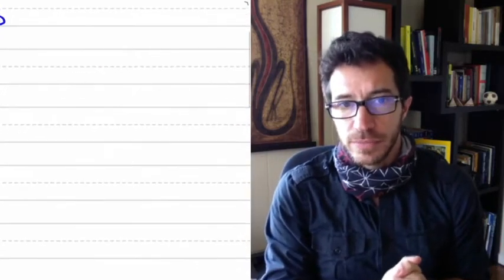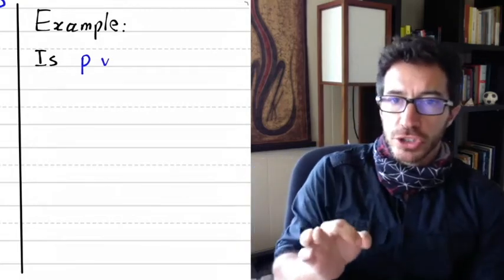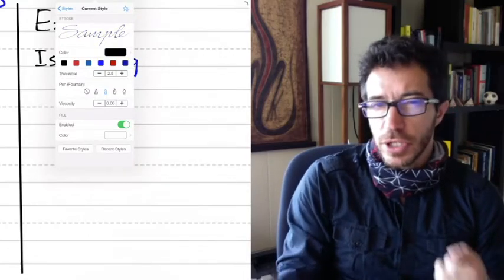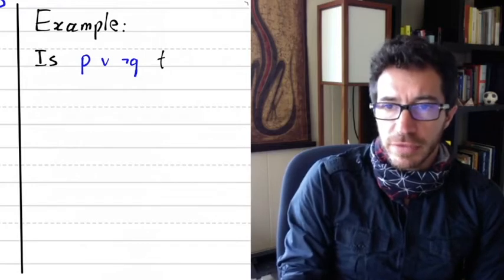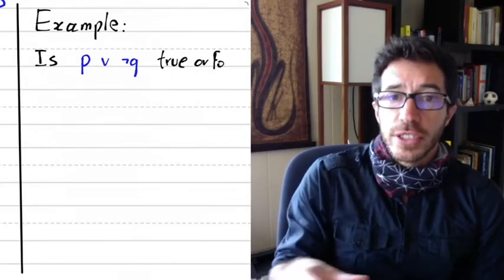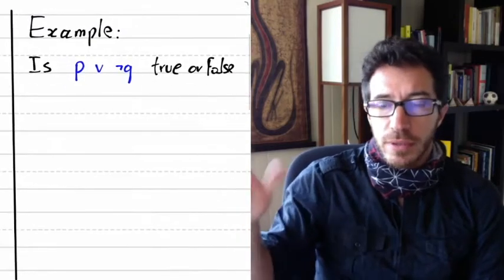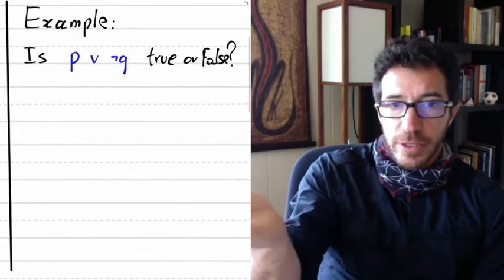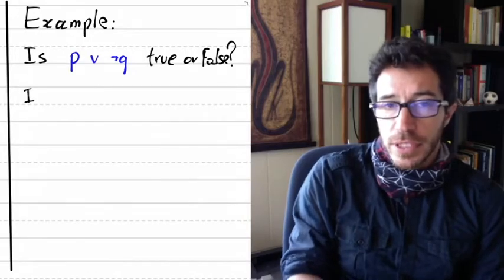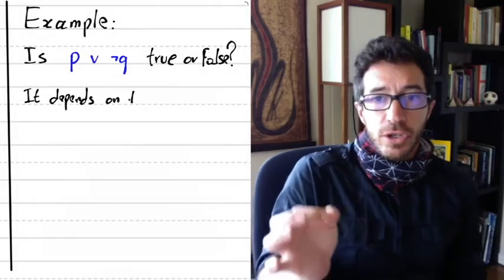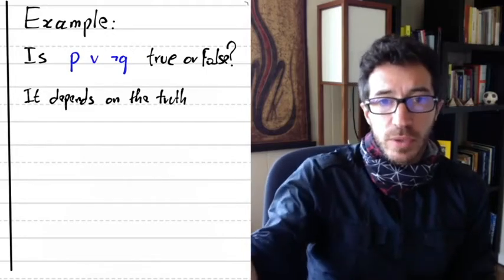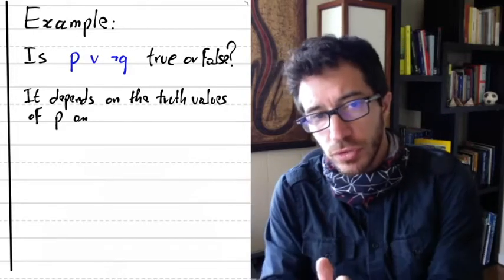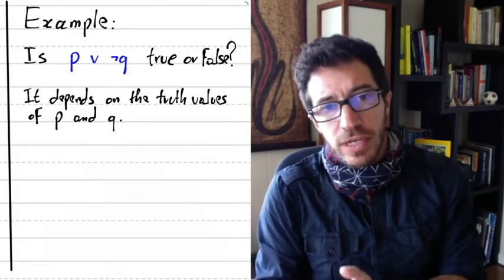Let's look at an example. Consider the formula P OR NOT Q, where P and Q are variables. Is this true or false? Well, to tell whether it's true or false, we need to know whether P and Q are true or false. The answer is going to depend on the truth values of P and Q — we couldn't know whether P OR NOT Q is true or false without knowing about P and Q. So the truth value of a formula depends on the truth values of its variables.